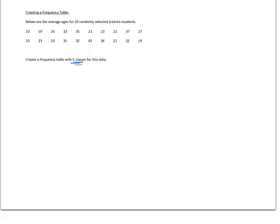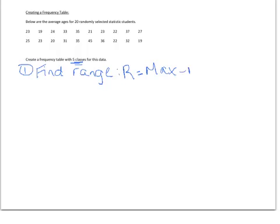The first thing we're going to do is find the range of the data set. The range is the maximum value minus the minimum value. In this case, our maximum age in this sample was 45 and our minimum was 19. So there's an age span of 26 years in this sample — that's our range.